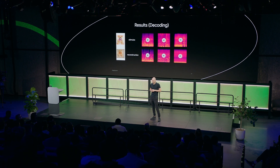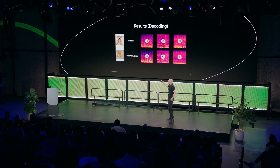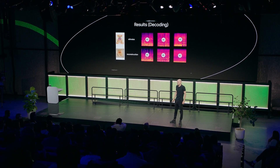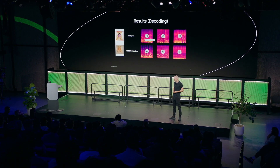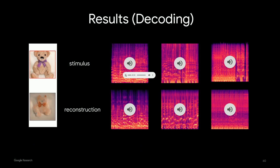Now we can look at the results of the decoding. It's analogous to the image reconstruction we saw — here on the left I put that as a reference so you get the idea. At the top is the stimulus, that's what people heard while they were in the MRI machine. At the bottom is the reconstruction, the output of a MusicLM model. We can listen to the first example here of the stimulus, and then the reconstruction — you can pay attention to how it sounds a little bit similar.